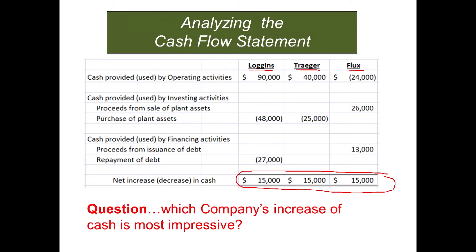Let's start with Flux. Flux has a negative $24,000 from operations. Do you see that there's a problem? Operations of your business - that's supposed to be what's generating income and generating cash flow. It's costing them cash to operate their business. When you have an operating activity that's a negative number, that's problematic. This company - Flux - did have a $15,000 net increase in cash. Well, they sold some of their plant assets and went and got a loan.